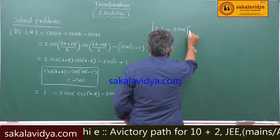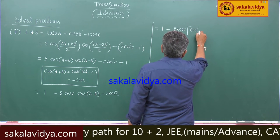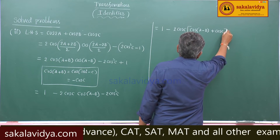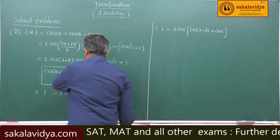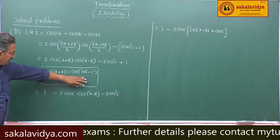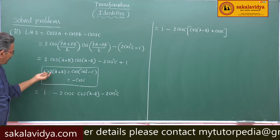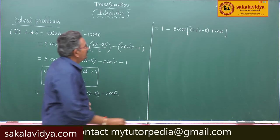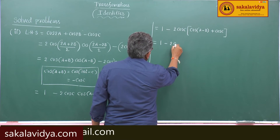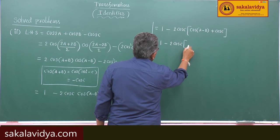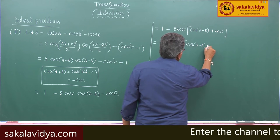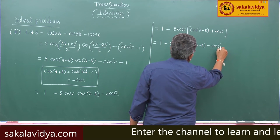We get cos(A−B) plus cosC. Here, once again, check: cos(A+B) equals minus cosC, so cosC equals minus cos(A+B). So this becomes 1 minus 2cosC into cos(A−B) minus cos(A+B).